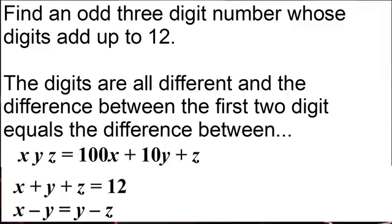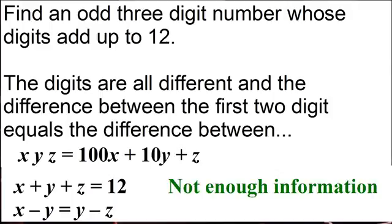The second part of the question is that the difference between the first two digits x and y, so x minus y, is equal to the difference between the next two digits which is y and z. So in the movie they give an answer of seven hundred and forty-one but actually there's not enough information to solve this question